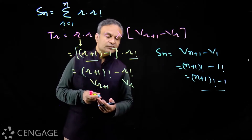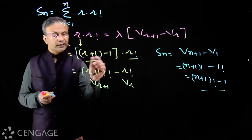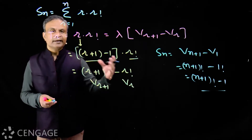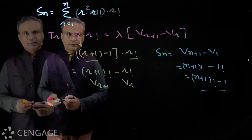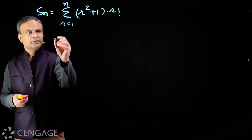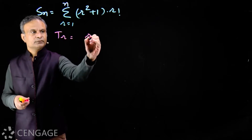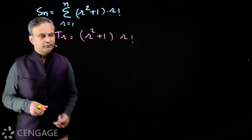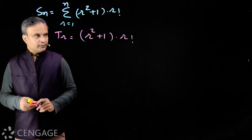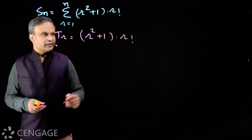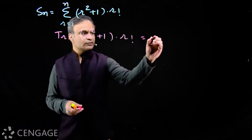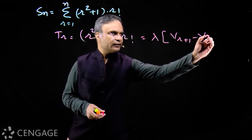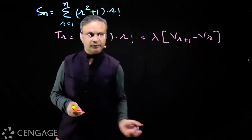We also have to use the concepts of factorial notation — factorial notation ke concepts use karne padenge, otherwise we won't get the idea. Now for the next question, the term Tr is (r² + 1) multiplied by r factorial. How can we get this in the form lambda multiplied by v(r+1) minus v(r), or v(r) minus v(r+1)?